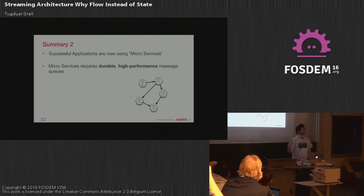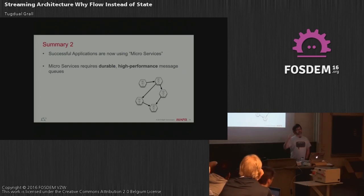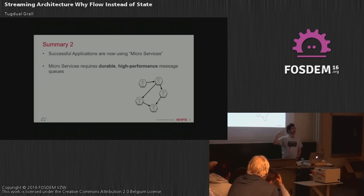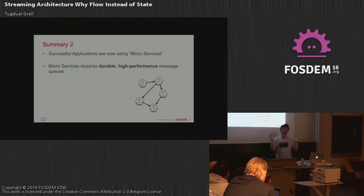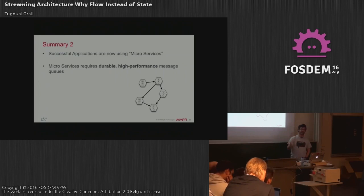You want messaging and a stream of data between the different services. In this case, you send a message from a specific application and one or multiple services will consume it. One of the key parts here is, first, it has to be asynchronous. It changes completely the way you deploy and develop the application. Why? Because the volume of data you will consume will be very large, so you cannot always control latency across different services over the network.